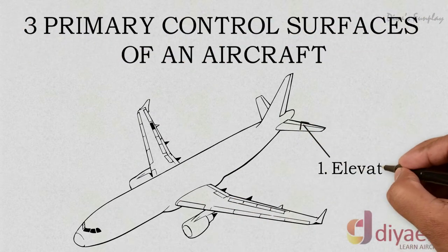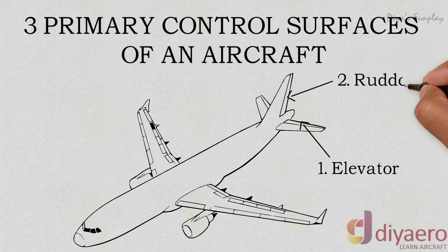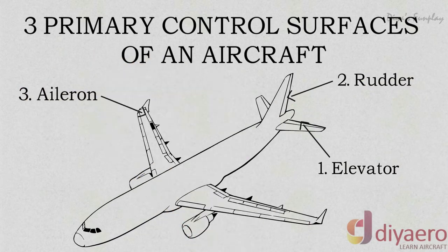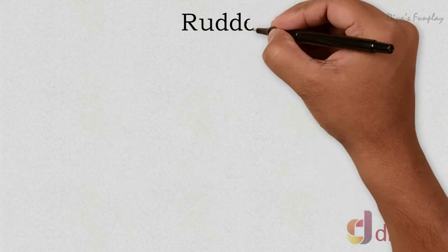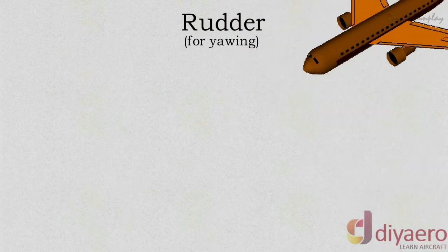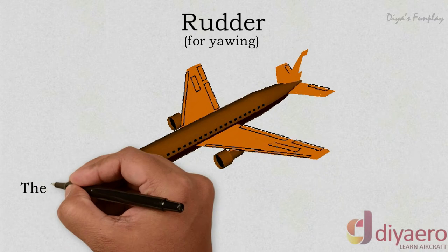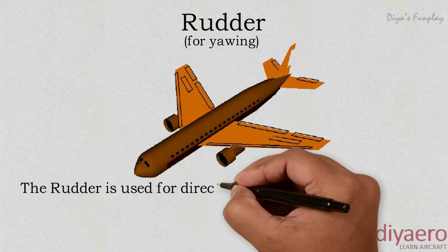The rudder is one of the primary control surfaces for maneuvering an airplane. The rudder is controlled by the pilot with the help of interconnected pedals in the cockpit. The rudder is hinged to the rear of the vertical stabilizer.